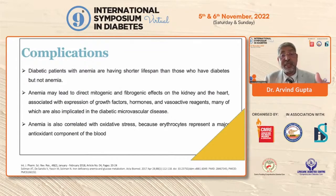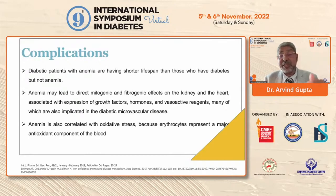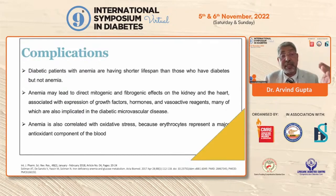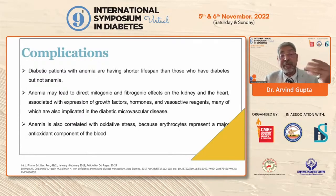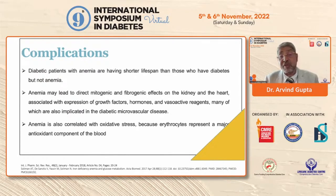Diabetic patients with anemia have a shorter half-life and shorter lifespan. Anemia may lead to mitogenic and fibrogenic effects on the kidney and heart, associated with the expression of growth factors, hormones, and vasoactive reagents.